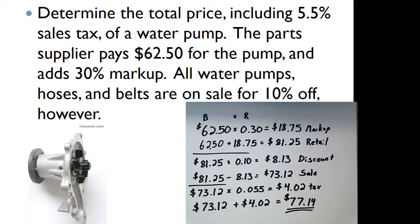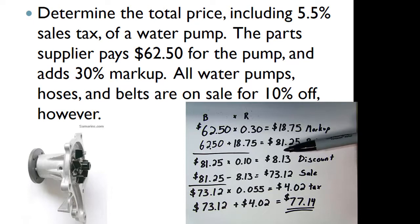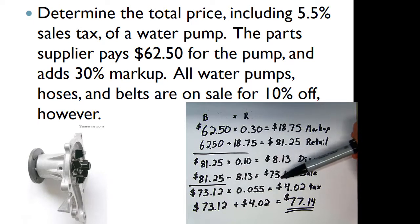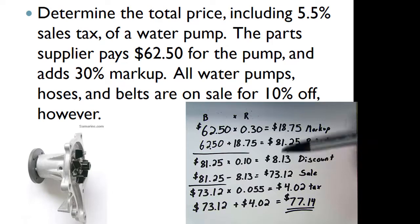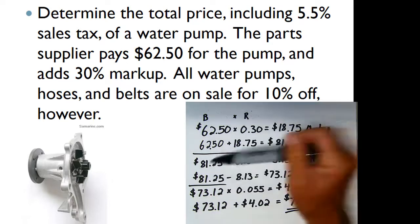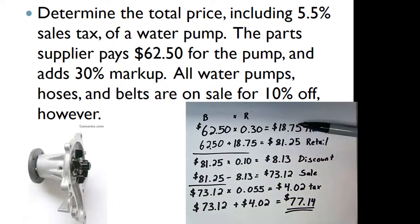A lot of steps there. A common mistake is to combine all the percentages at the beginning — for example, saying a 30% markup minus 10% off equals a 20% markup. That doesn't work because our base is changing at each step.